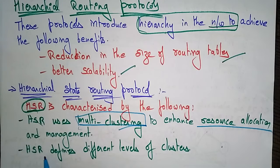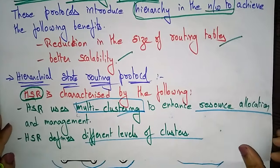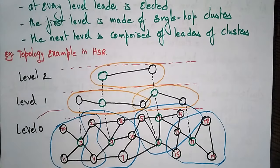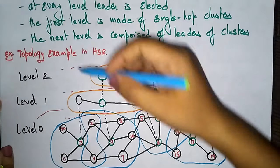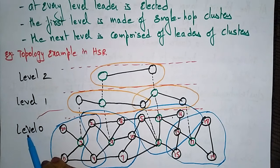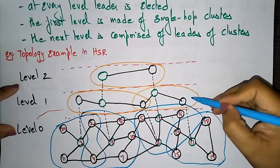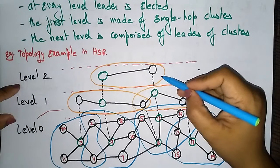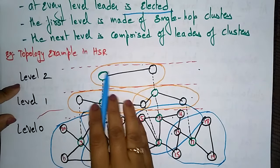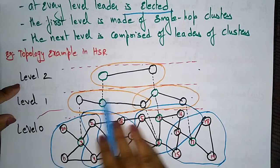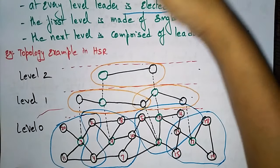The hierarchical state routing defines different levels of clusters. At every level, a leader is elected. As you can see in the topology shown here, there are levels: level 0, level 1, and level 2. At each and every level a leader will be elected. The green circle node is the leader at one level, and leaders exist at each level.